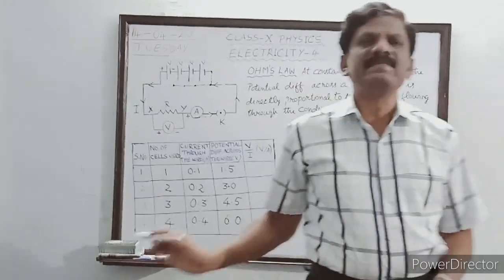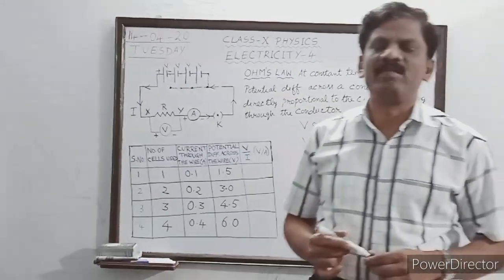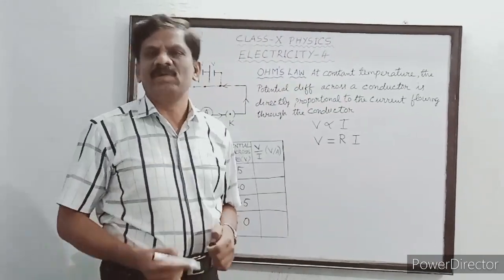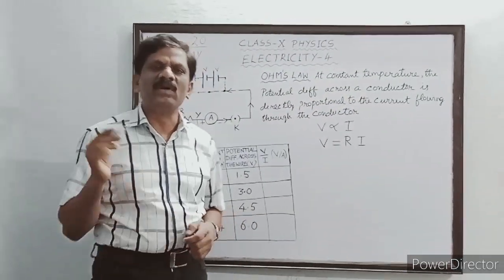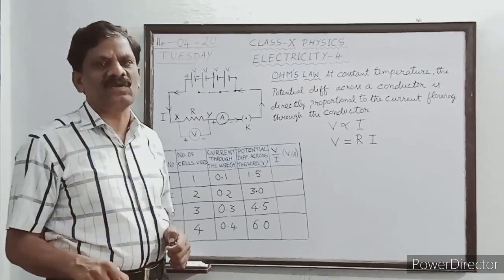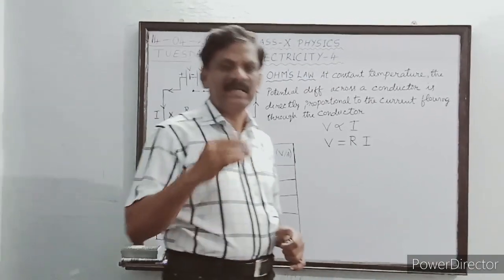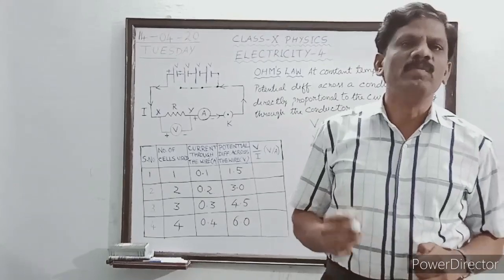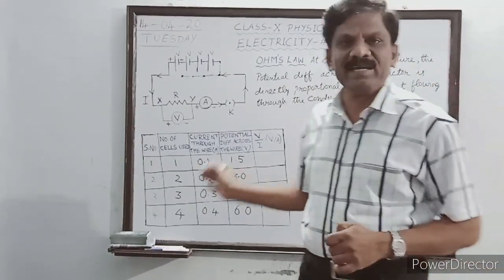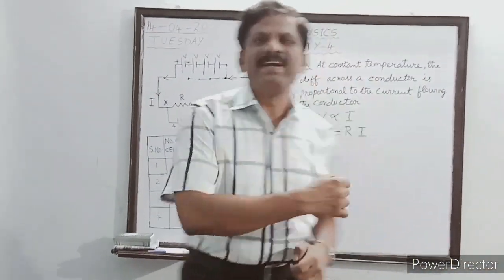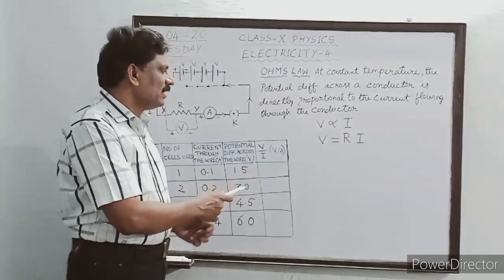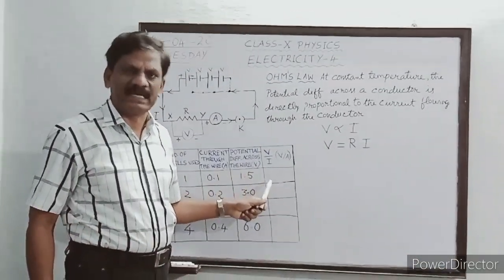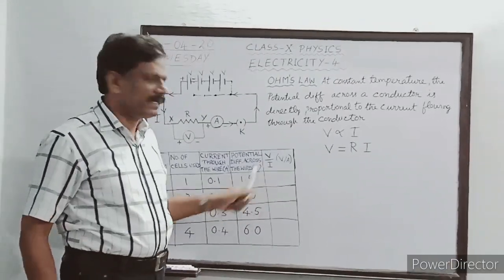So when you do this experiment in the physics lab, you go on changing the number of cells, and the corresponding potential difference and current have to be recorded in the tabular column. The final column is meant to find the ratio of the potential difference to the current.